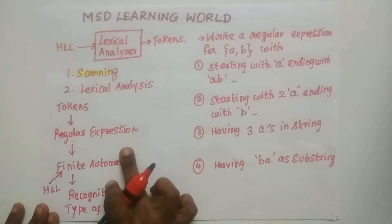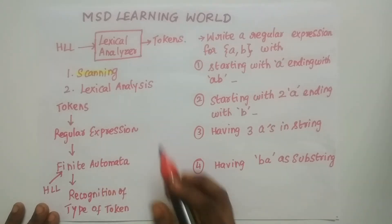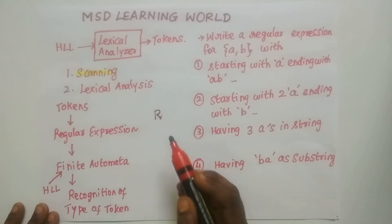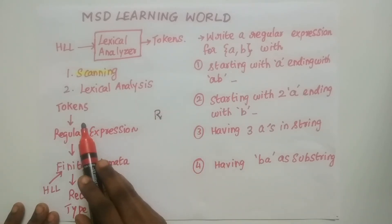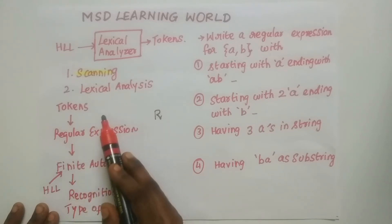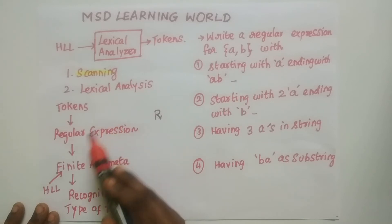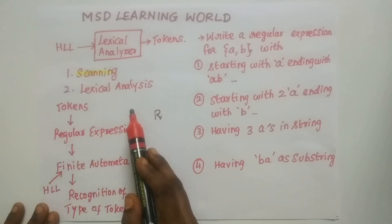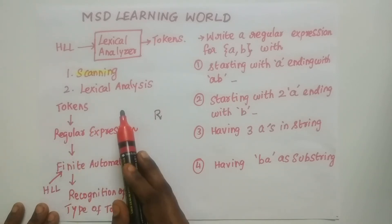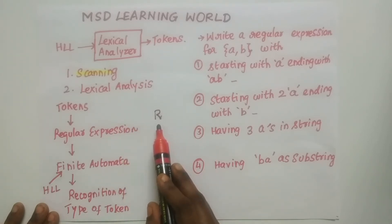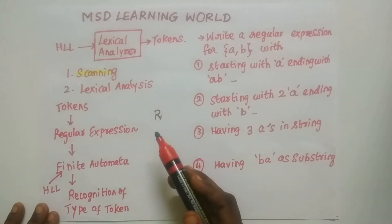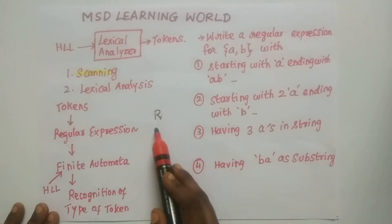Let us start with regular expressions. A regular expression, represented by R, is the set of rules used to specify tokens. Tokens include keywords, punctuations, variables, operators, and constants. If R is the regular expression, we need to know how to create it for a given set of tokens.